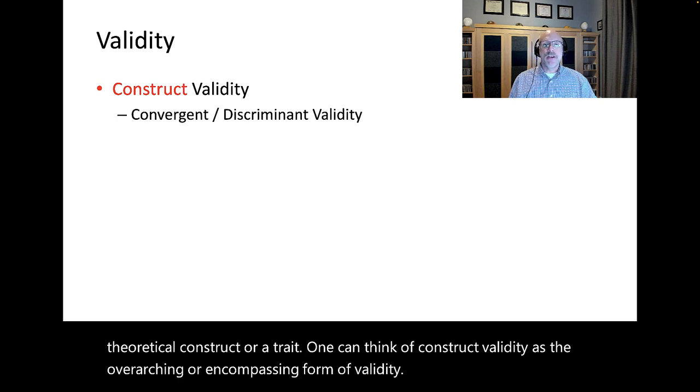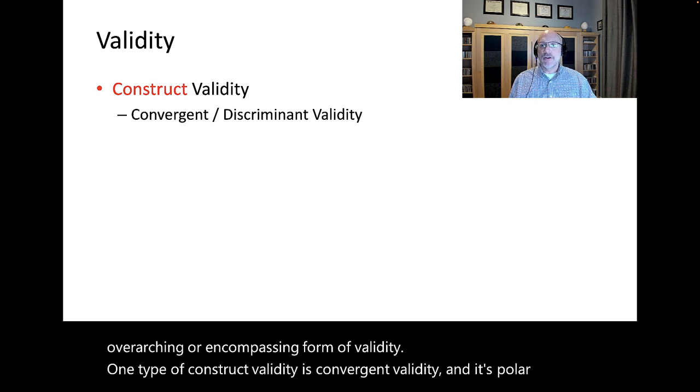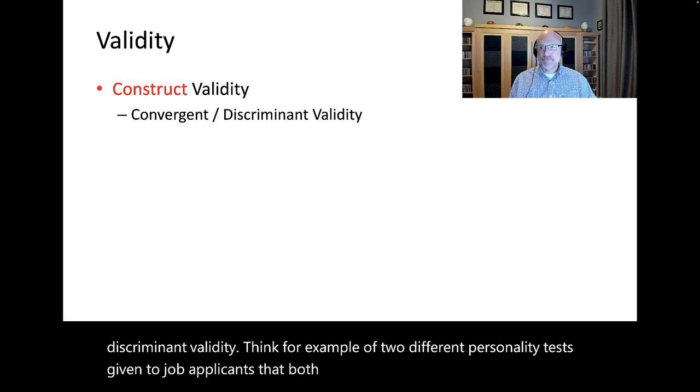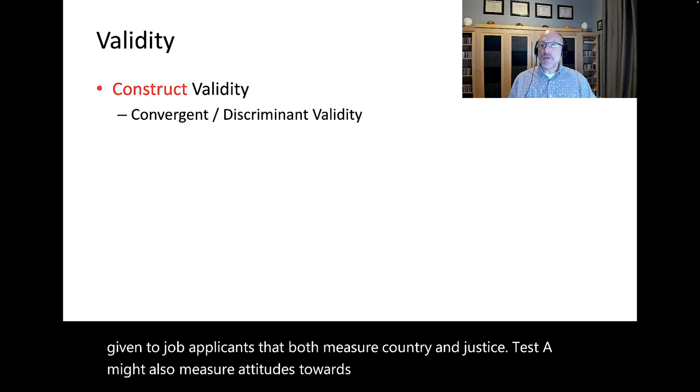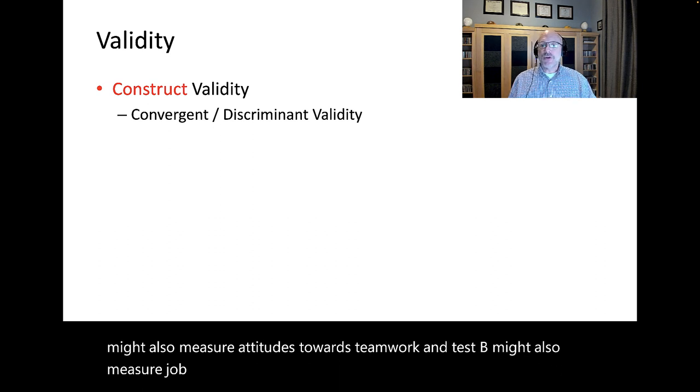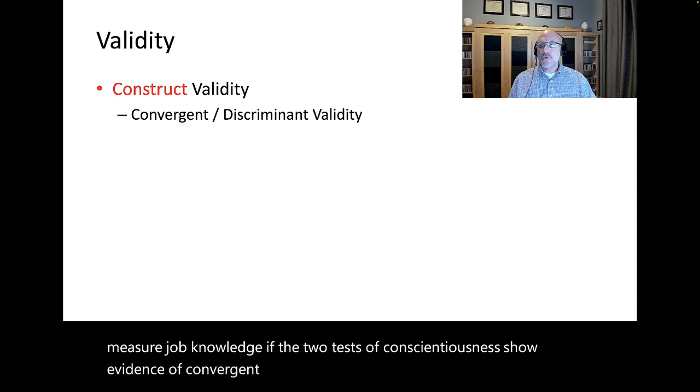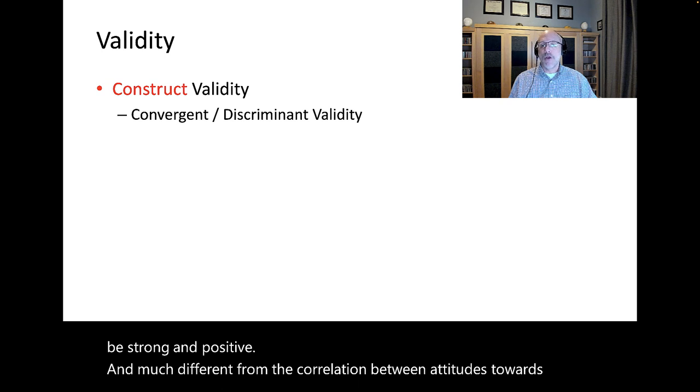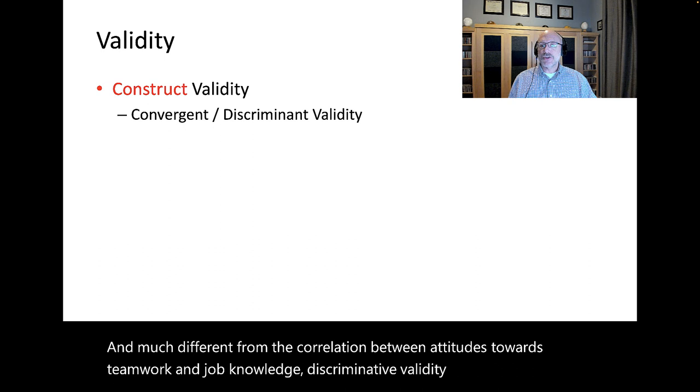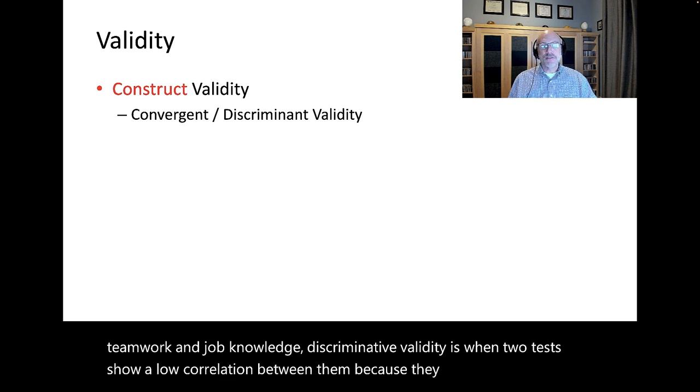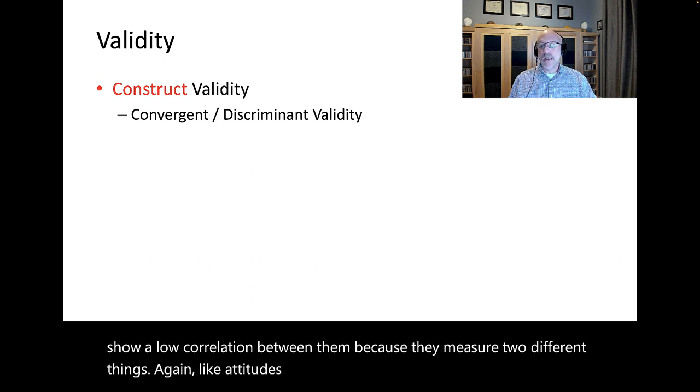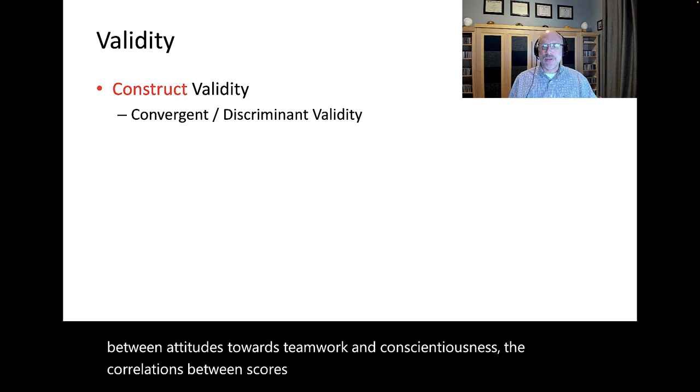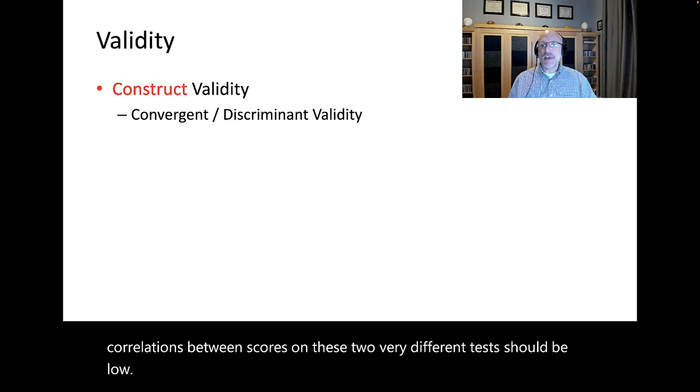One type of construct validity is convergent validity and its polar opposite, discriminant validity. Think of two different personality tests given to job applicants that both measure conscientiousness. If the two tests of conscientiousness show evidence of convergent validity, then the correlation between them should be strong and positive. Discriminant validity is when two tests show a low correlation between them because they measure two different things. The correlations between scores on these two very different tests should be low and weak because the tests measure different things.